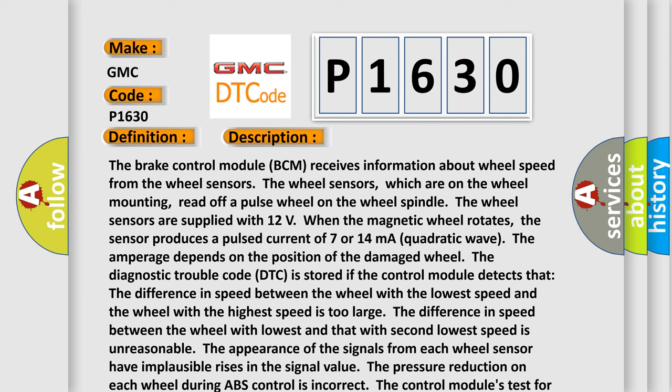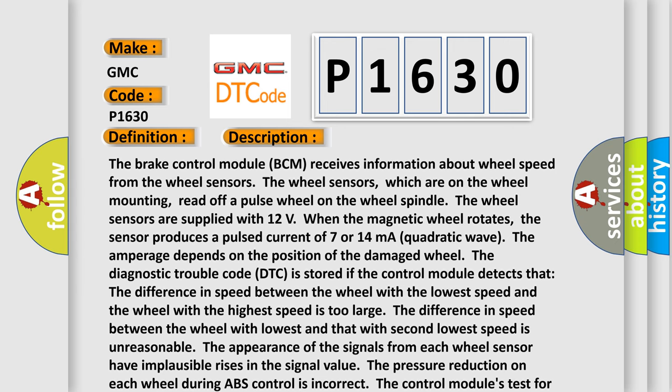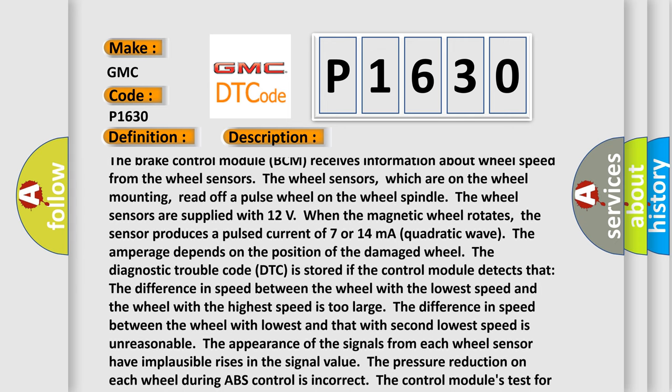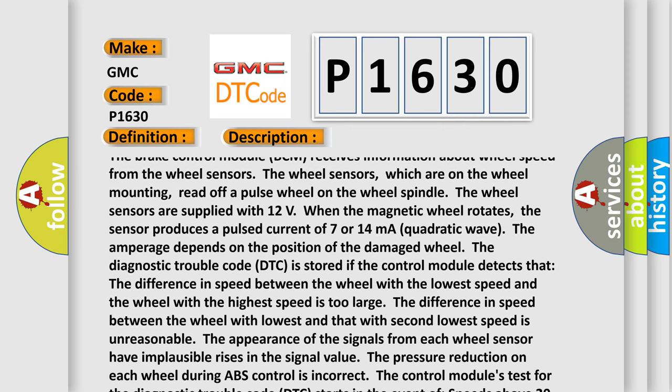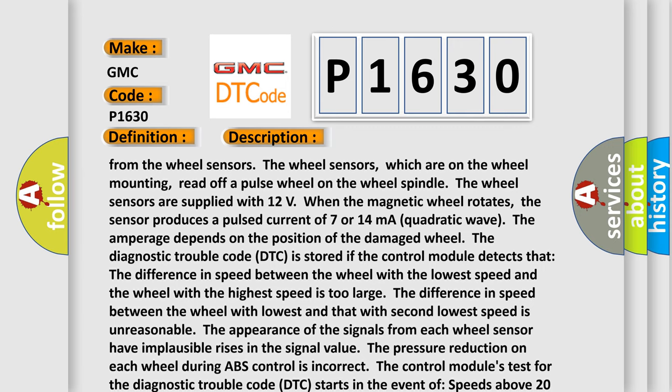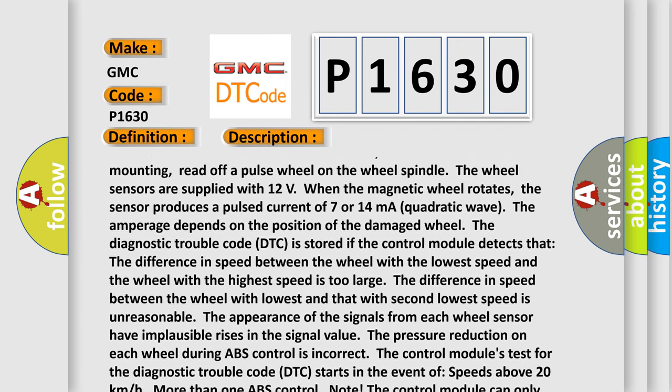The brake control module BCM receives information about wheel speed from the wheel sensors. The wheel sensors, which are on the wheel mounting, read off a pulse wheel on the wheel spindle. The wheel sensors are supplied with 12 volts. When the magnetic wheel rotates, the sensor produces a pulsed current of 7 or 14 milliamperes quadratic wave.